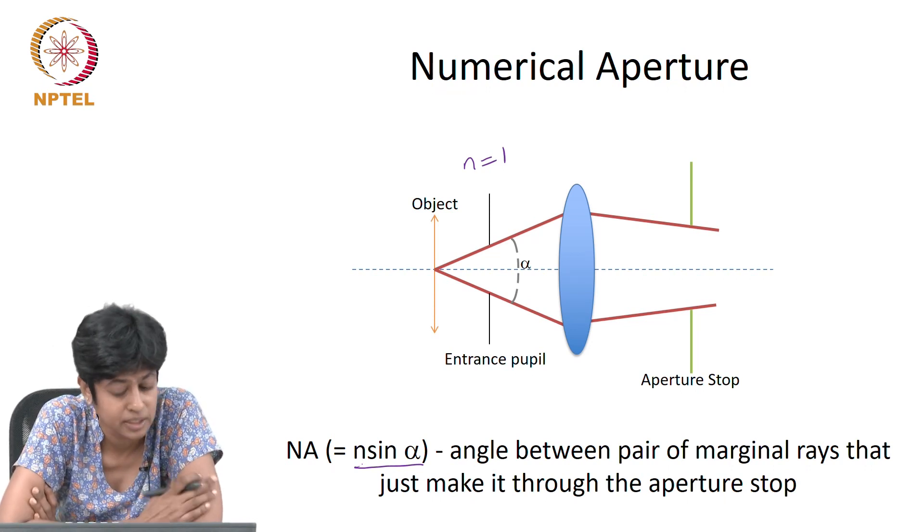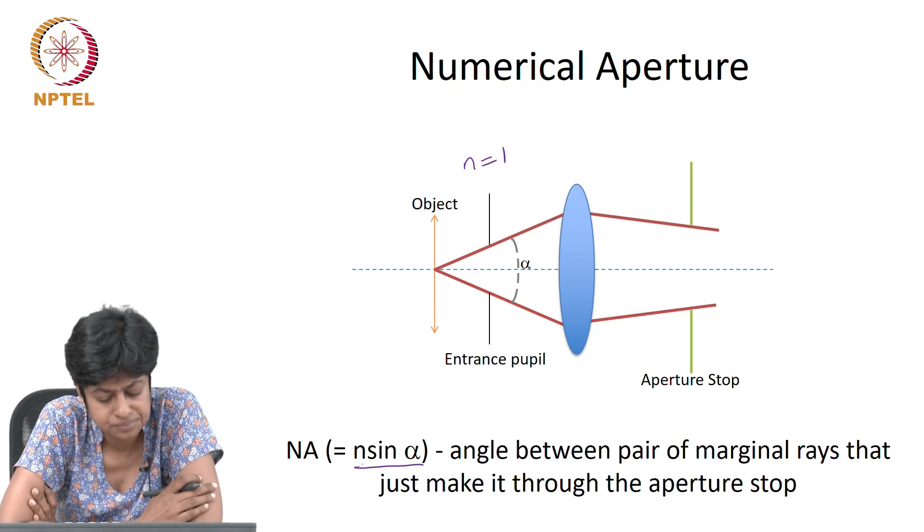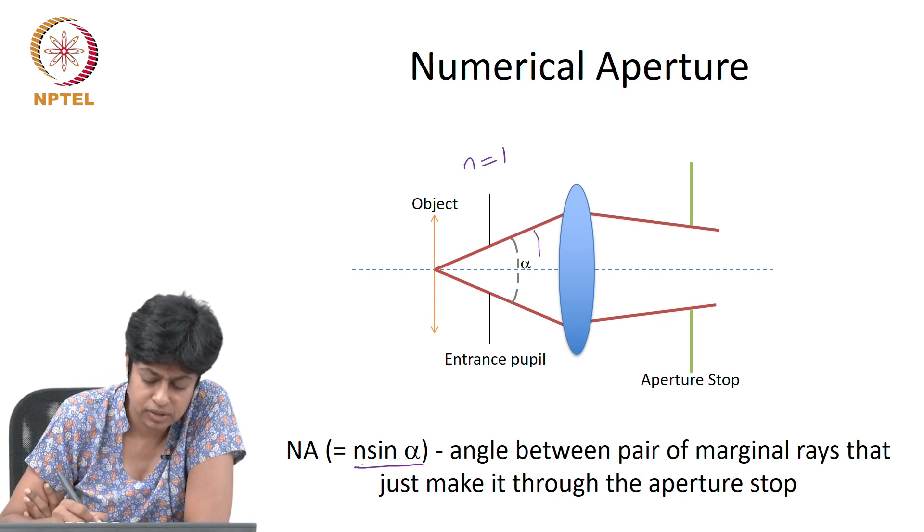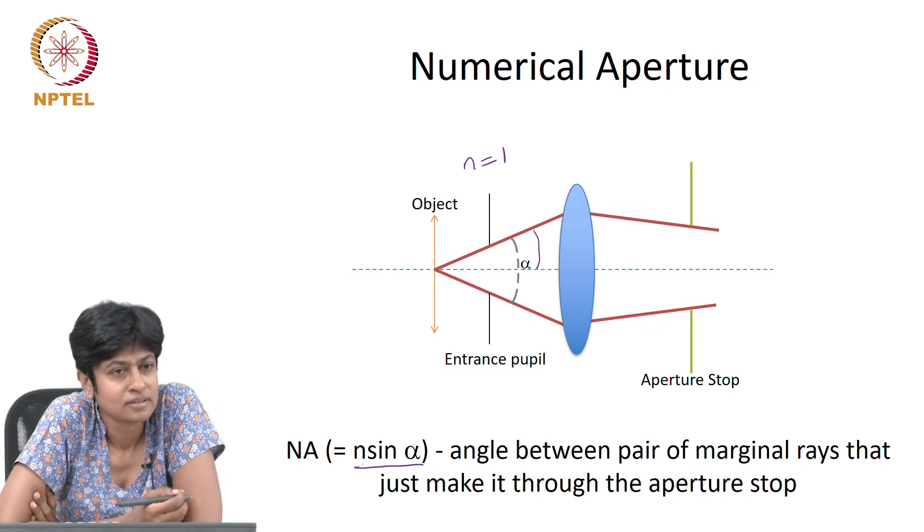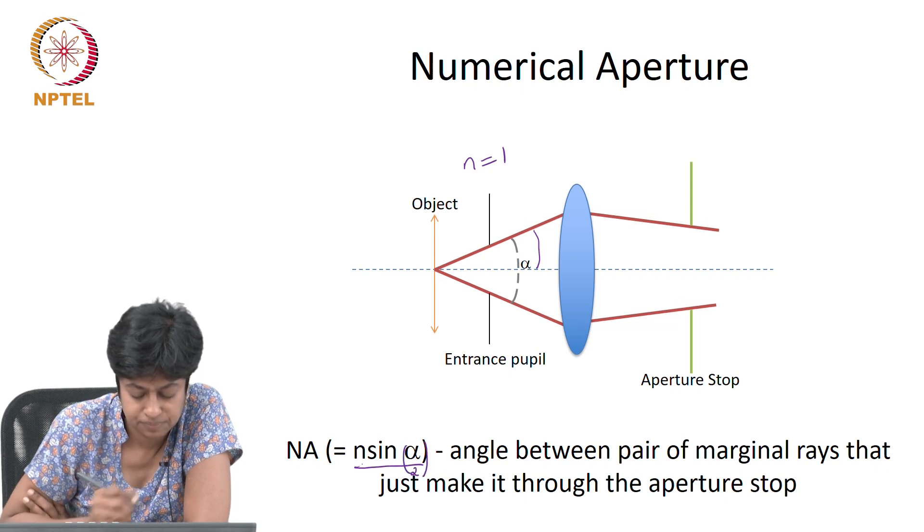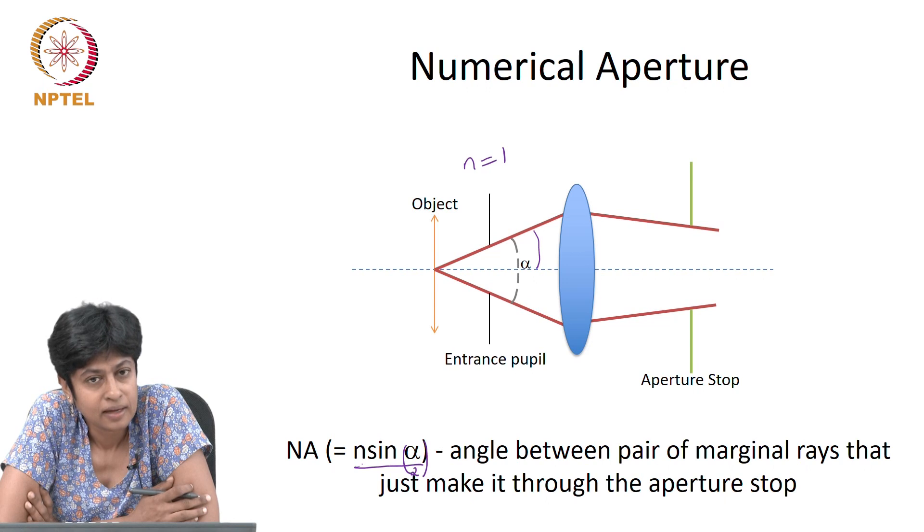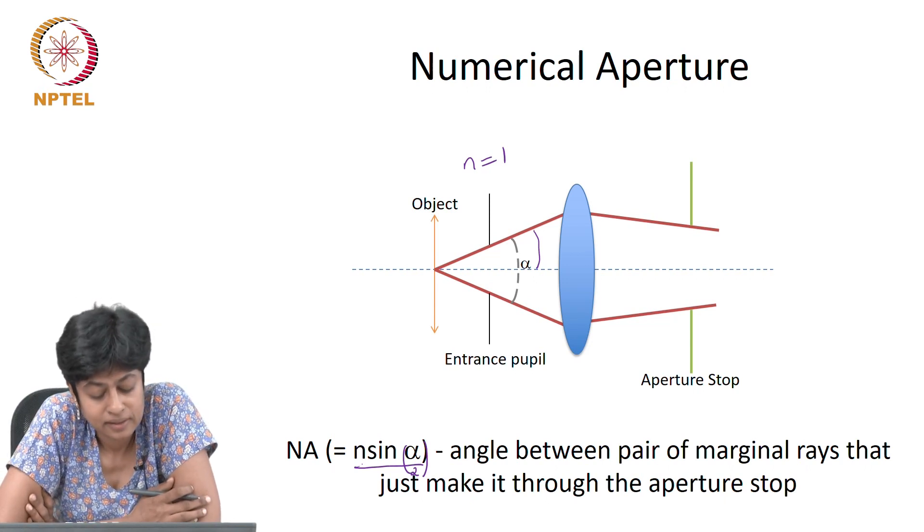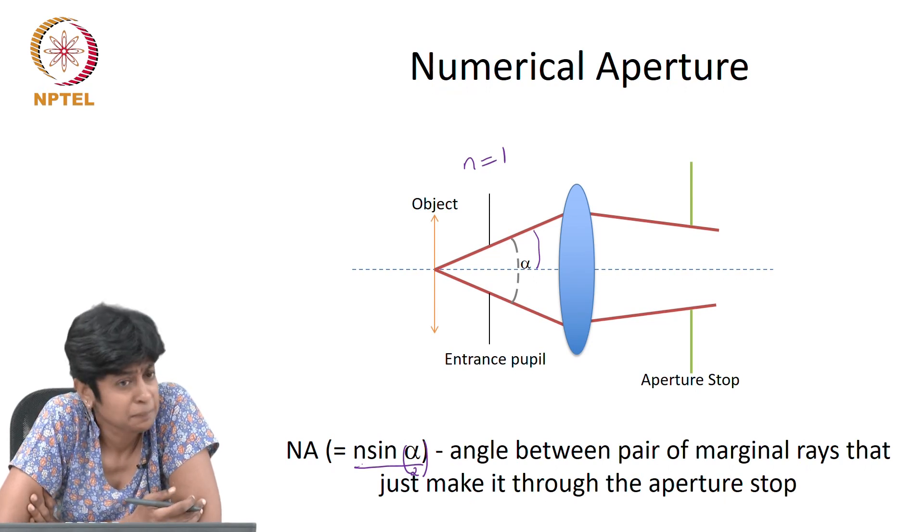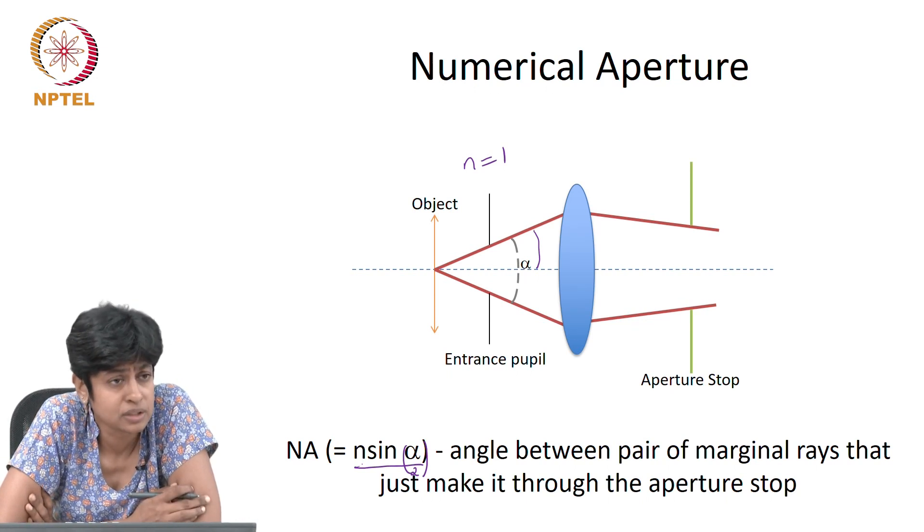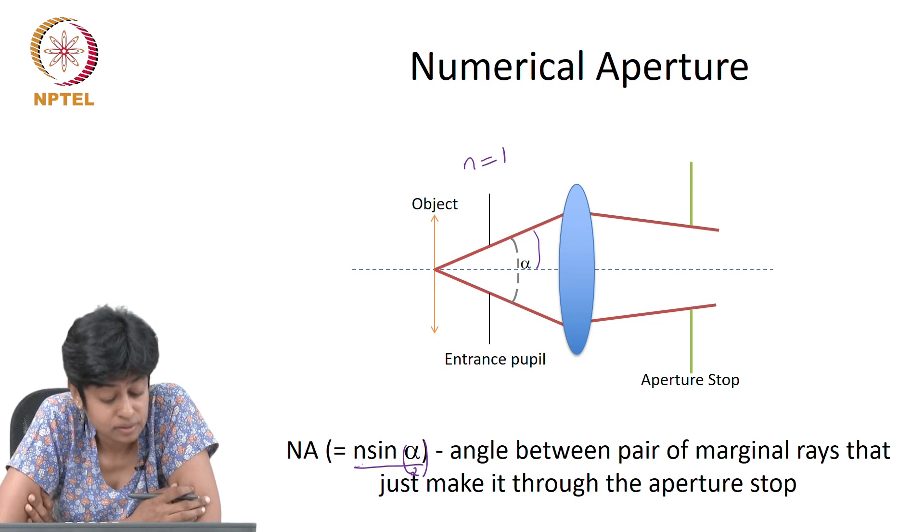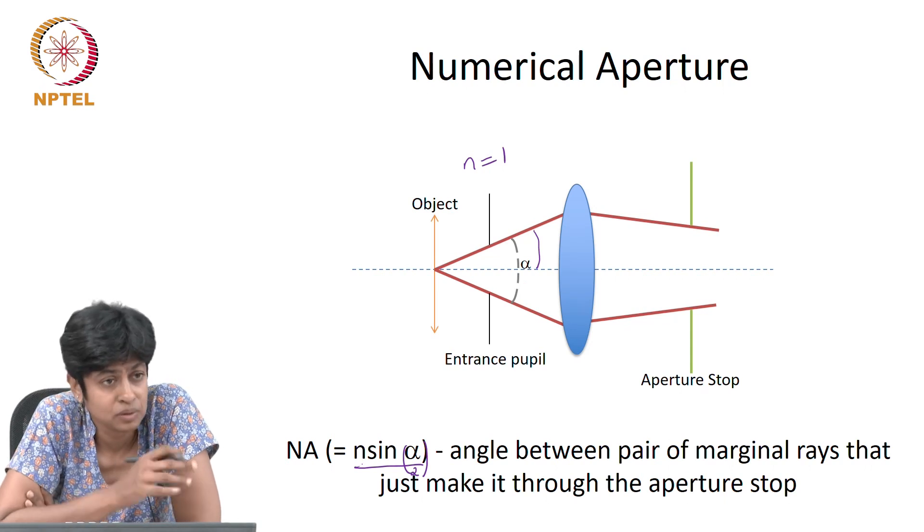1, because I am saying sin α, and it should be α by 2 here the way I have defined it. So the largest angle that α by 2 could have is 90 degrees, but no optical system is going to capture a cone of light with 90 degrees. So you want the numerical aperture to be 1 if the medium outside is air, but that does not happen.